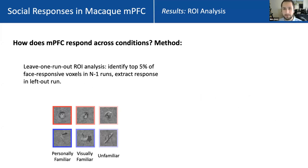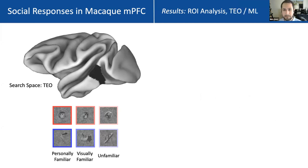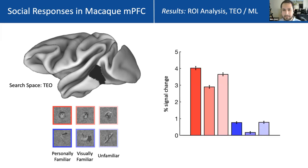We do a leave-one-run-out ROI analysis: we take N-1 of our runs, extract the top 5% of face-responsive voxels within a search space, and extract the responses of that region across categories in the left-out run to avoid a non-independence error. For regions of temporal cortex — a search space consisting of area TEO, which contains face area ML — we see a strong response to all face conditions over objects, about a 4% signal change dynamic range, and a slight preference for familiar faces.